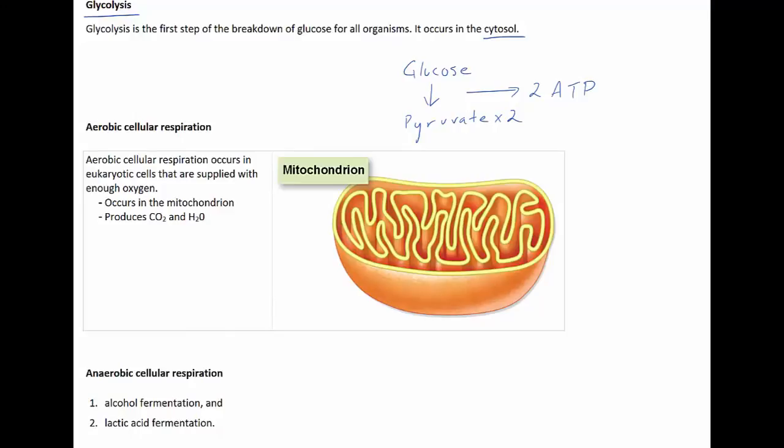These two ATP molecules may be sufficient as an energy source for certain microorganisms, but it's not enough energy for multicellular organisms. The steps that occur after glycolysis depend on whether oxygen is present or absent.